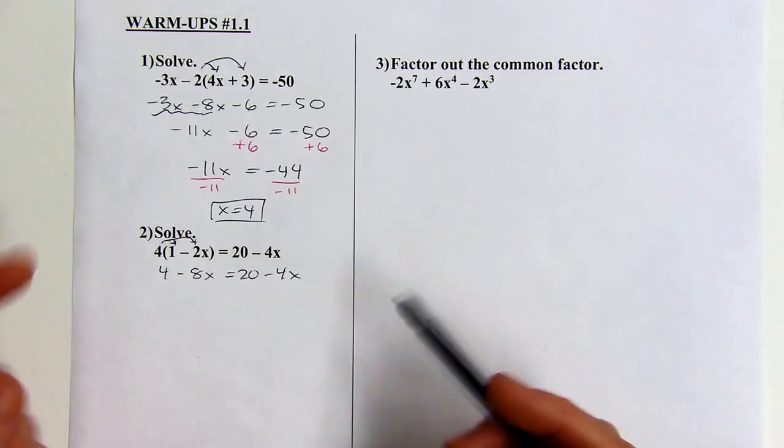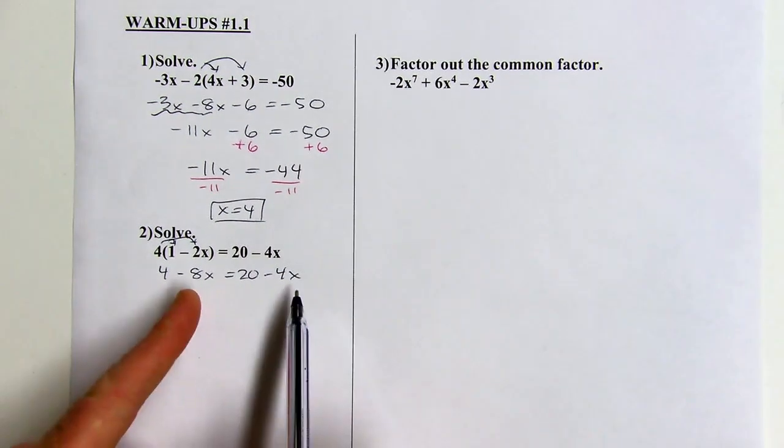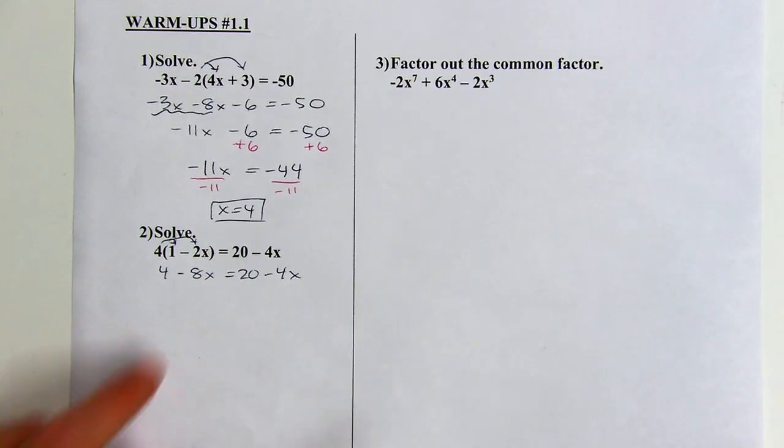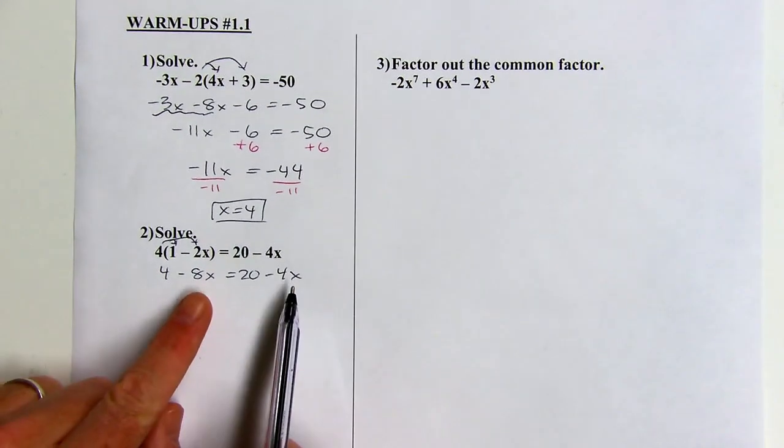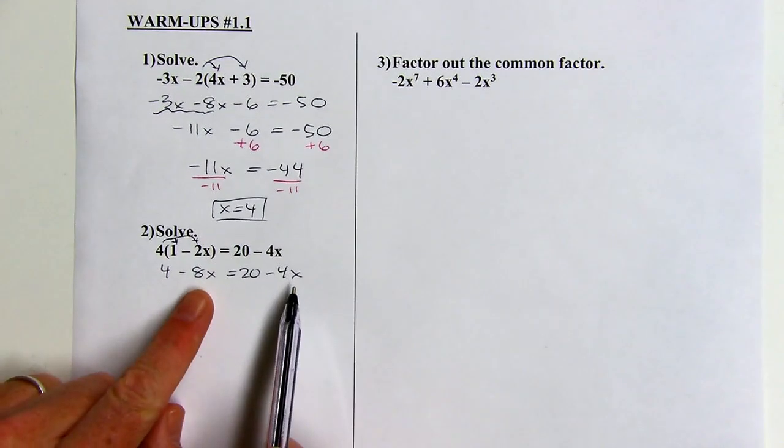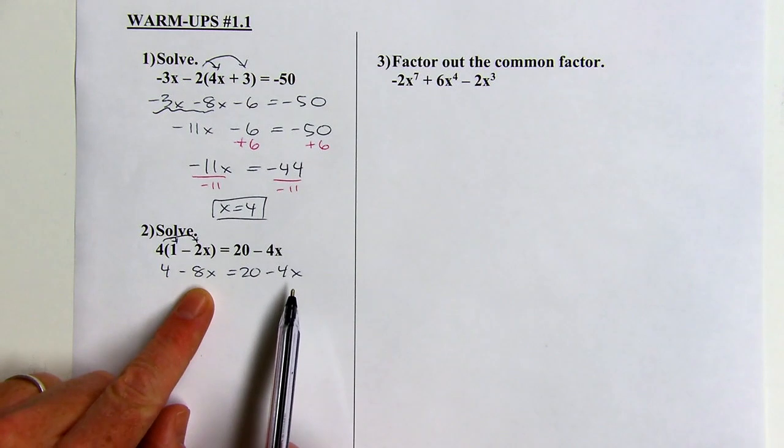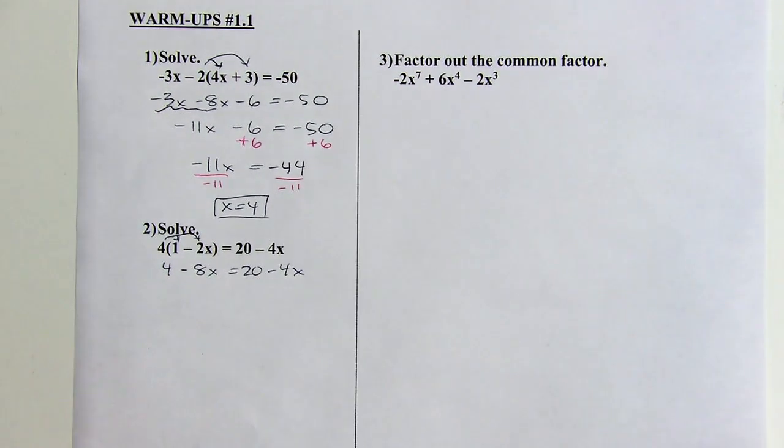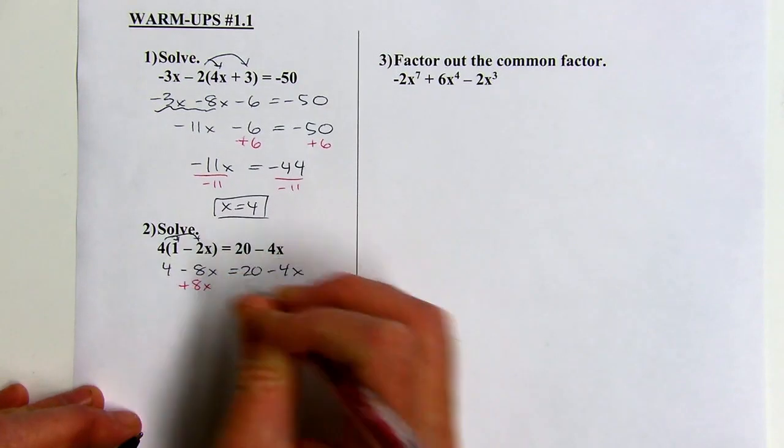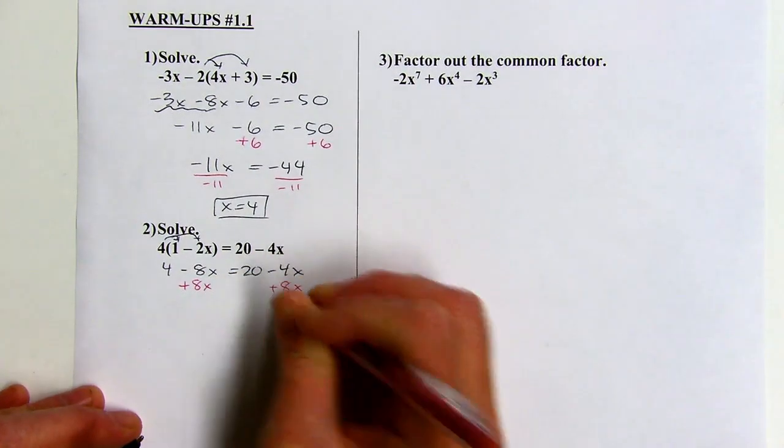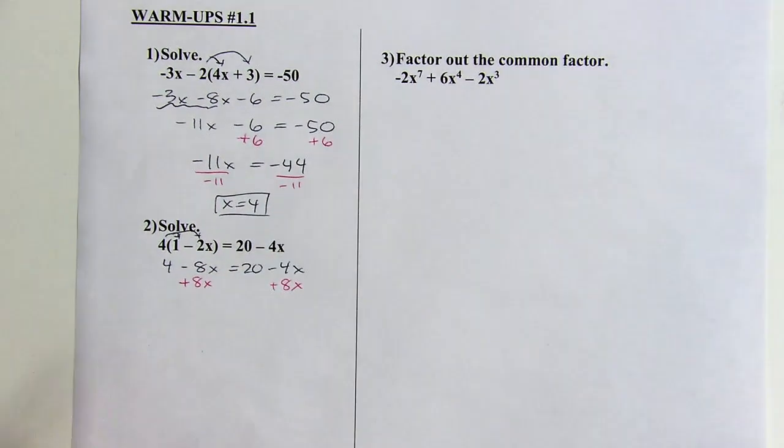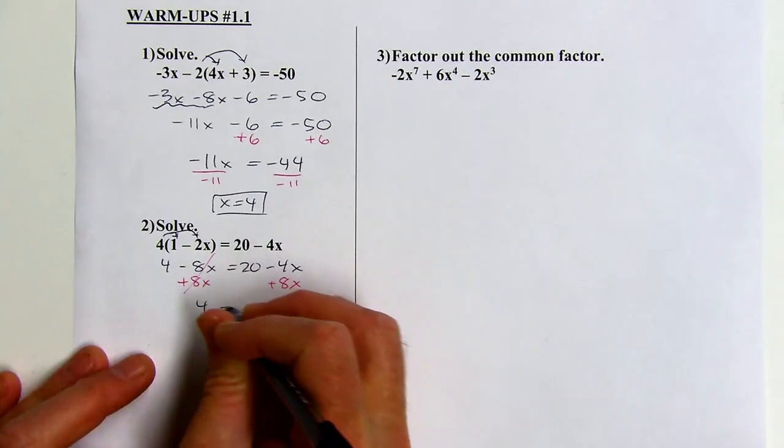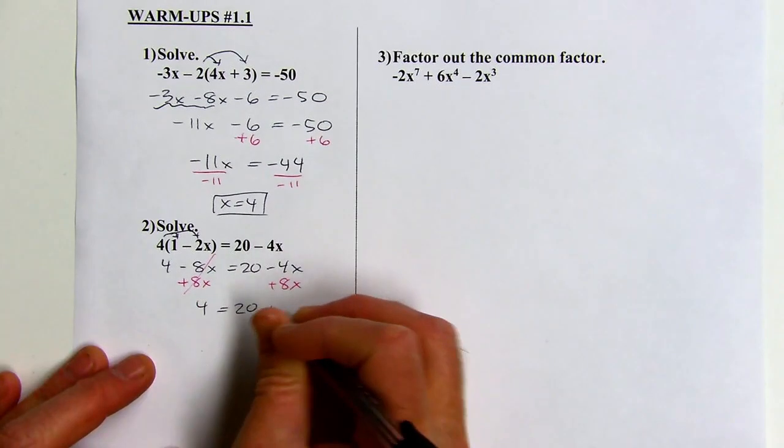Okay, and the big difference between this and problem number 1 is that I have x's on both sides of the equation. But, that's okay, so I want to combine my two x terms, they're like terms. So, I'm going to have to move them both to one side or the other, it doesn't matter which side. So, I could either add 4x to both sides, or add 8x. I tend to want to keep the x term positive, so I'm going to choose to add 8x. Okay, those will cancel there. Now I have 4 equals 20 plus 4x.